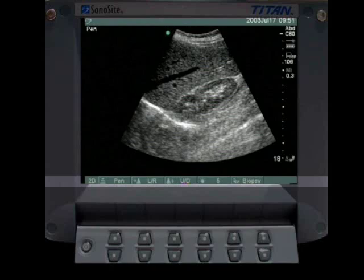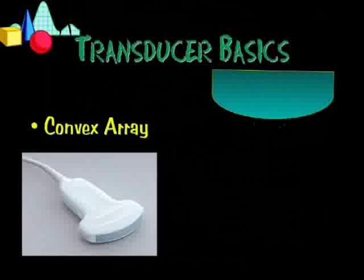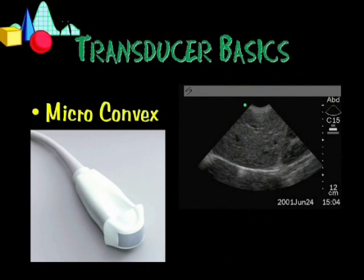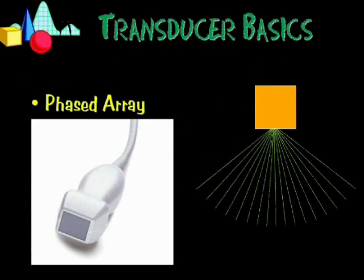The ultrasound machine is equipped with various types of probes. Convex probes and micro-convex probes send out sound in a curved pattern, yielding a sector shape on the ultrasound machine screen. Phased array probes are flat but steer their sound electronically, also producing a sector shape on the screen. Linear probes send out sound in a straight wave and produce a square shape at high resolution and high frequency.